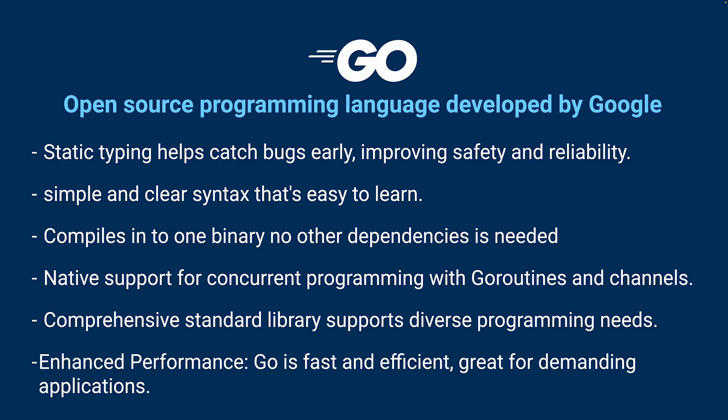High performance: Go is a fast language like C or C++. It compiles directly to machine code, making efficient use of system resources. This is very important for applications that need to be fast and reliable.